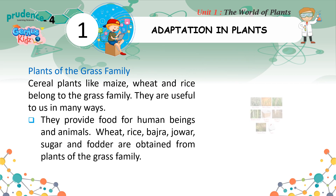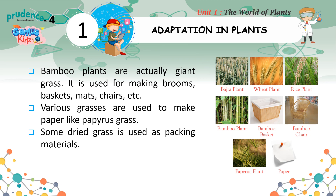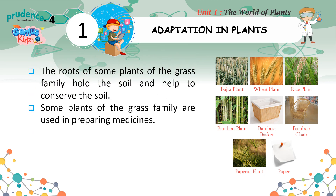Plants of the grass family: Cereal plants like maize, wheat, and rice belong to the grass family. They are useful to us in many ways, providing food for human beings and animals. Wheat, rice, bajra, jowar, sugar, and fodder are obtained from grass family plants. Bamboo plants are actually giant grass, used for making rooms, baskets, mats, chairs, etc. Various grasses are used to make paper — like papyrus grass. Some dry grass is used as packing material. The roots of some grass family plants hold the soil and help conserve it, and some are used in preparing medicines.